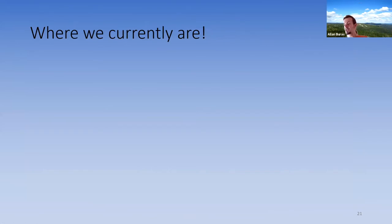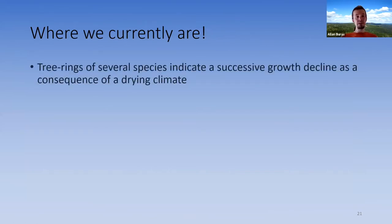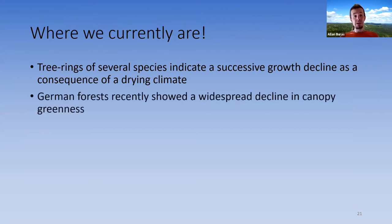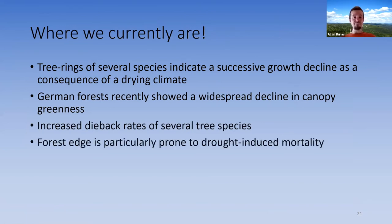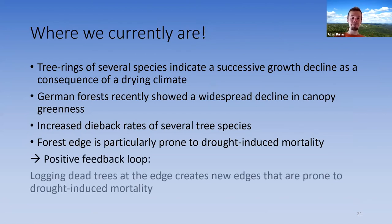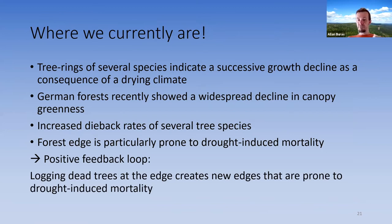Answering where we currently are: tree rings of several tree species indicate a successive growth decline as a consequence of drying climate, and German forests have recently shown a widespread decline in canopy greenness coinciding with increased dieback rates of several tree species. Forest edges are particularly prone to drought-induced mortality, which bears the risk of a positive feedback loop — removing dead trees at the edge creates new edges that are again prone to drought-induced mortality.